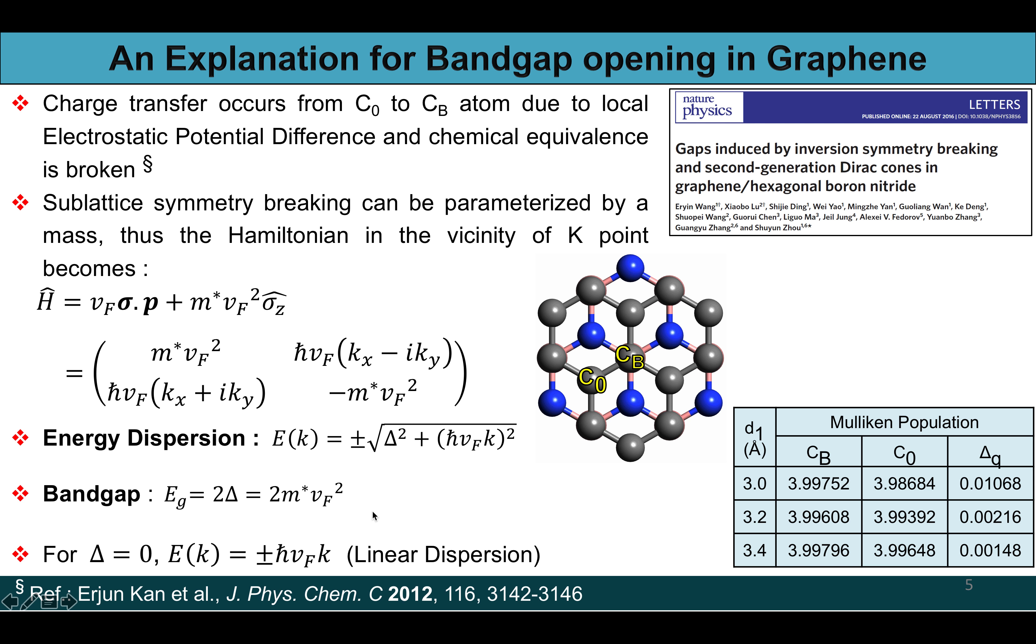Here the bandgap Eg equal to 2 delta, that is 2m* times vF squared. It converts into the original linear dispersion of graphene when delta becomes zero.